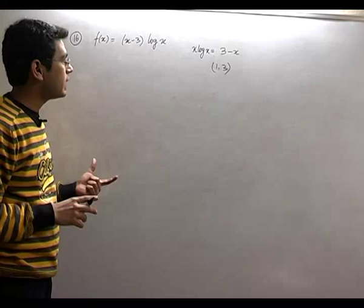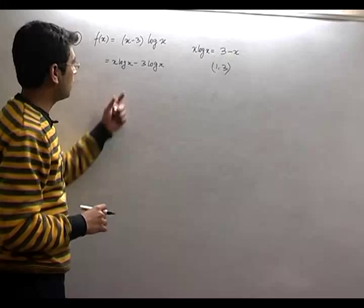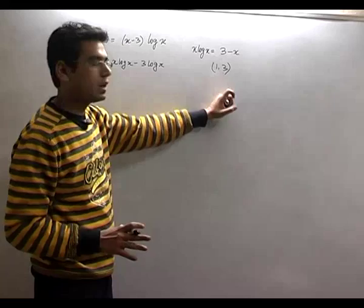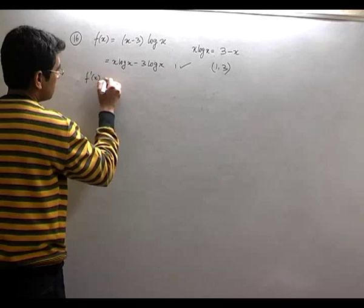We want to apply Rolle's theorem. First, I have to prove that it's continuous. I'll write it as x log x - 3 log x. See, log x curves are continuous, x curves are continuous, and x greater than 1 is given, so there's no problem. That means this whole function is continuous. So my first condition is true. Second is differentiable.